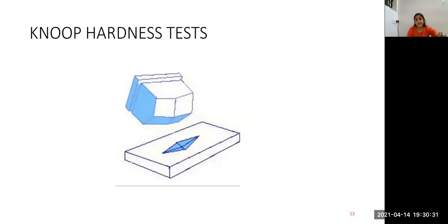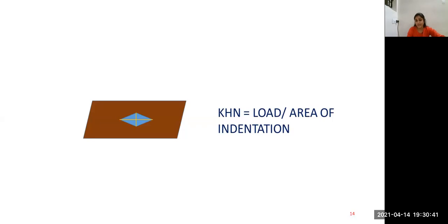Under Knoop hardness, a diamond tip is used. When this is made to press on the surface of the object, a rhomboid shape outline is obtained. In rhomboid, we have minor and major axis. The elastic recovery occurs along the minor axis and the larger major axis remains unchanged. In this larger axis, the major axis, this is used in the formula and when the hardness is measured using Knoop hardness, it is measured by load by area of indentation.